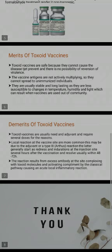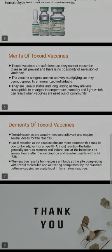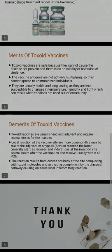Demerits of Toxoid Vaccines: Toxoid vaccines usually need an adjuvant and require several doses for these reasons. Local reactions at the vaccine site are more common, which may be due to an adjuvant-type reaction.